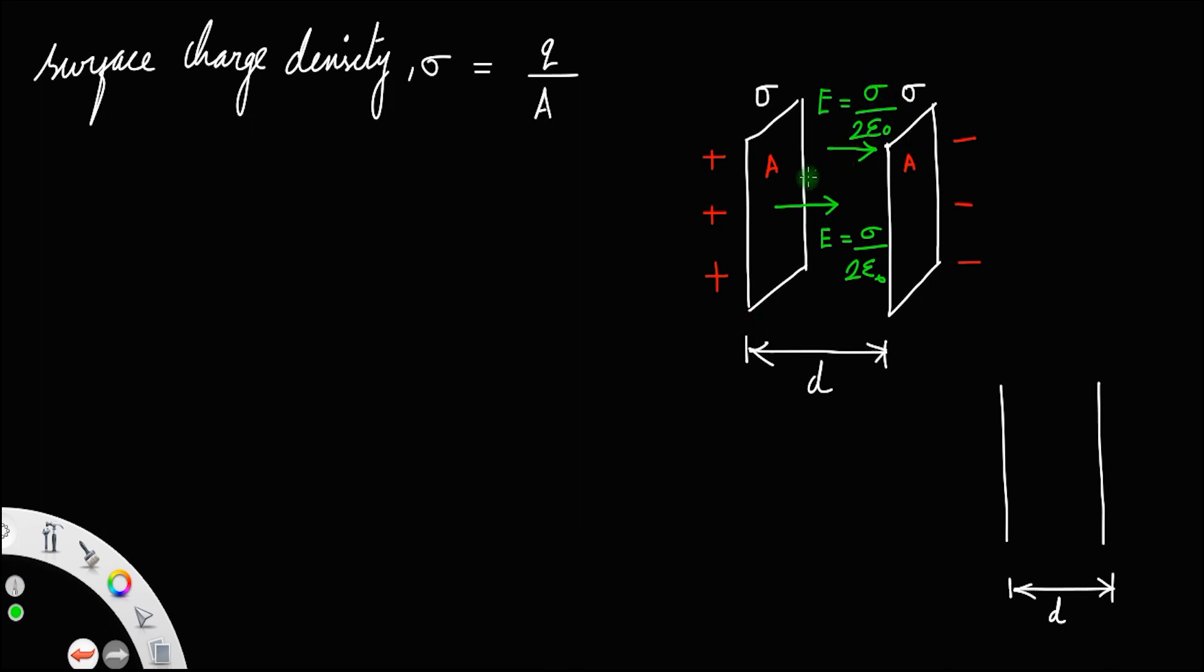We already discussed the electric field between two parallel plates of opposite sign. Also, we know that the electric field outside both the plates will be zero. If you have any doubt, we already proved this. You can go back and check the video on the electric field due to an infinite long charge sheet.